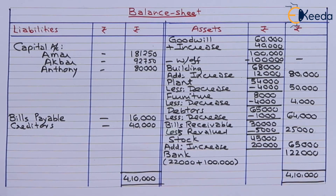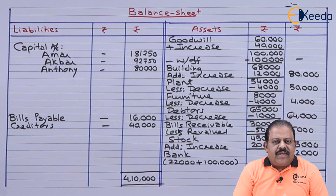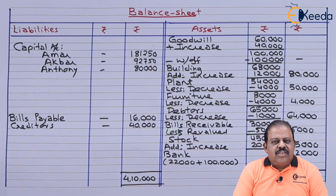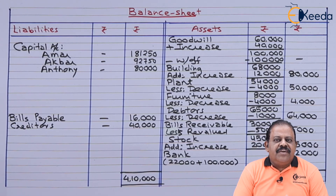In this question, we learned a unique adjustment where goodwill already appears in the old balance sheet. We opened the goodwill account with the opening balance, then as per adjustment, goodwill was increased and revalued by 40,000, distributed among old partners in old ratio. Finally, the adjustment says goodwill is to be written off against capitals of all partners, so we need to calculate the new profit sharing ratio.